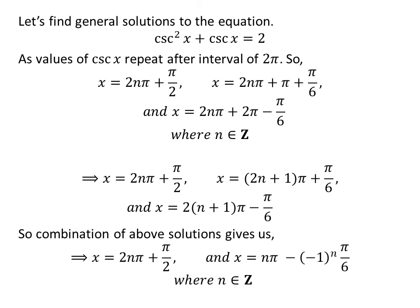Since 2n is an even integer and 2n+1 is an odd integer for any n, the union of these two sets is the set of all integers. Also, (minus 1) raised to the power n is minus 1 if n is odd, and plus 1 if n is even. So the general solutions are: 2nπ + π/2, and nπ minus (minus 1)^n times π/6, where n is any integer.